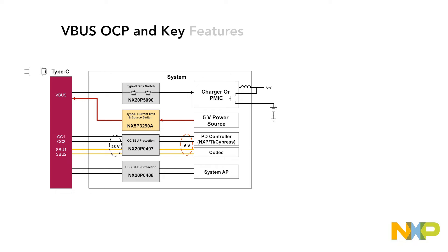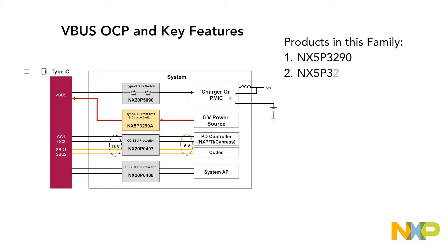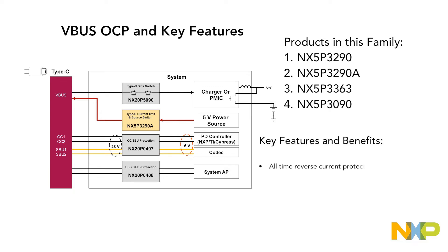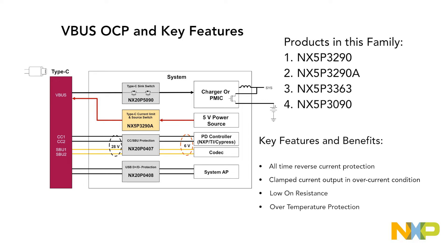Our VBUS OCP family includes the NX5P3290, the NX5P3290A, the NX5P3363, and the NX5P3090. These switches are attached with a Type-C current limit and source switch, featuring VBUS overcurrent protection. These devices come with all-time reverse current protection, clamp current output in overcurrent condition, low on resistance, and over-temperature protection.